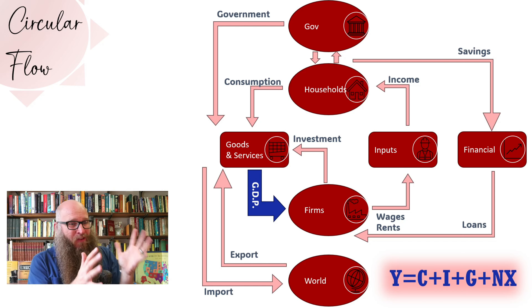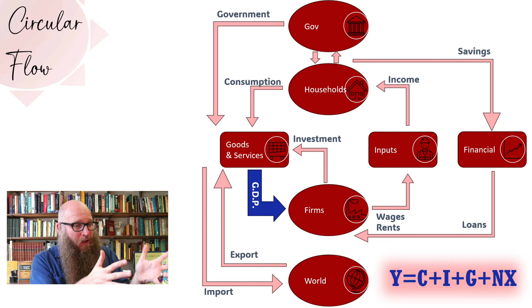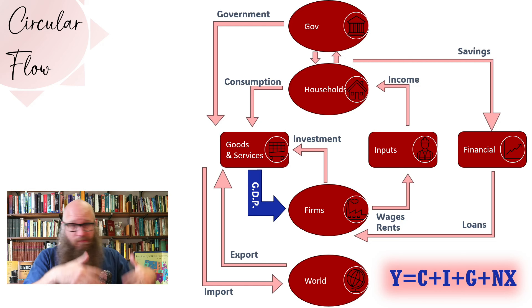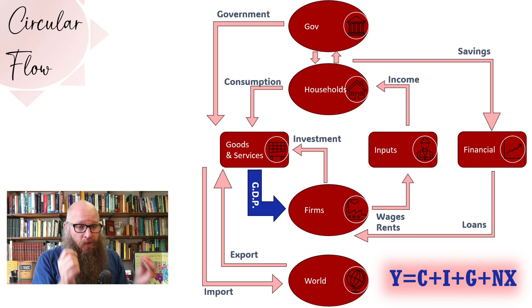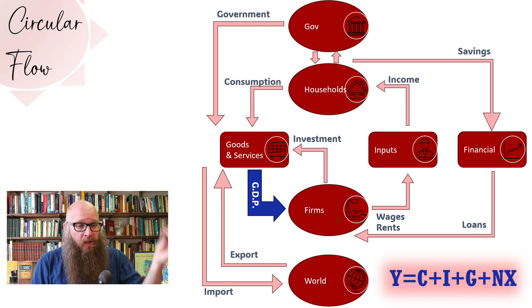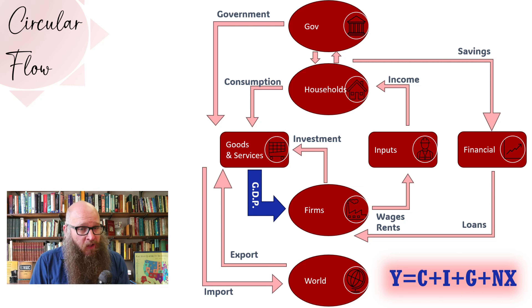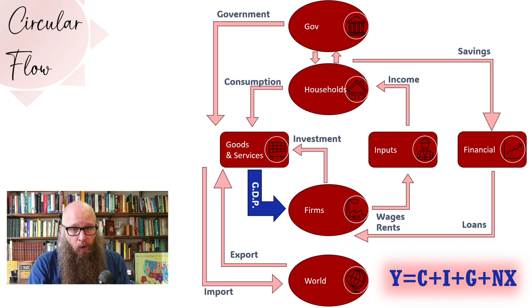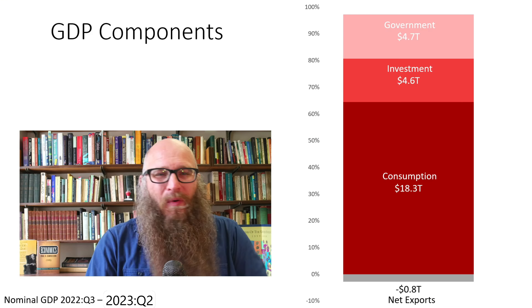We have this neat formula for it: Y stands for GDP, equals C plus I plus G plus NX — or consumption plus investment plus government expenditures plus net exports, which is exports minus imports.